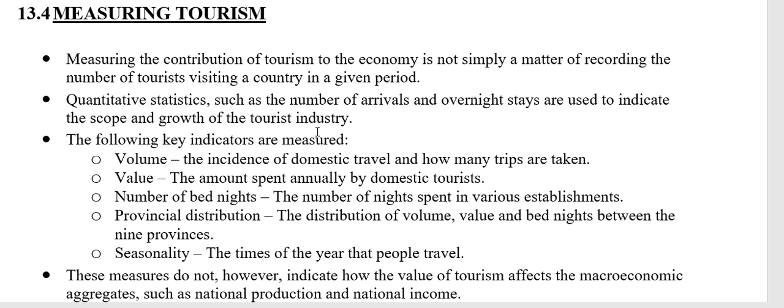We also want to see the distribution of tourism between the nine provinces — where are the preferred destinations, which areas are people visiting, and what activities are they participating in? So we look at the volume, the value, and the bed nights across the nine provinces: how many tourists are going to each province, how much money is being spent, and how many bed nights have been paid for in each province.